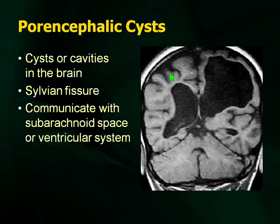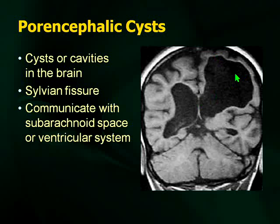The one you'll see much more frequently is porencephalic cysts. The two types of cysts talked about a lot within pediatrics are arachnoid cysts and porencephalic cysts. Remember that porencephalic cysts are associated with expansion of the ventricular system. For your purposes, it's this enlargement of the ventricle often associated with premature babies. The associated MRI finding is periventricular leukomalacia, and that's associated with porencephalic cysts.